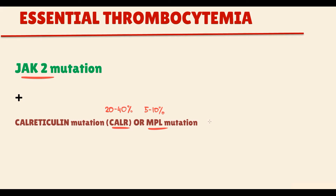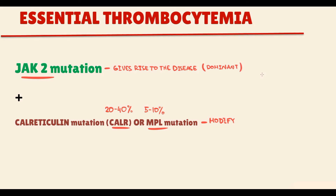The logic here is that these two mutations modify the phenotype of the disease produced by the JAK2 kinase mutation. In simple words, the JAK2 kinase mutation is the dominant mutation that gives rise to the disease, because it causes hyperproduction of myeloid cells. These additional mutations present in essential thrombocythemia are sort of weak — they cannot cause the disease themselves, but they can modify the pre-existing JAK2 kinase mutation. The question is: how do they modify it?